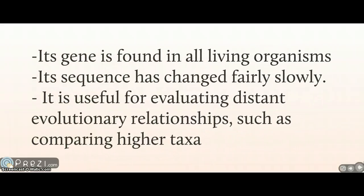The gene that encodes for SSU rRNA, which is a small ribosomal subunit, is found in all living organisms. This suggests it must have been established at an early stage in the evolution of life on the planet. Its sequence has changed fairly slowly; therefore, it is useful for evaluating distant evolutionary relationships, such as comparing higher taxa. If you tried to use it for evaluating closely related species, it wouldn't work because the sequence would be identical and you wouldn't learn anything.